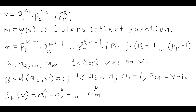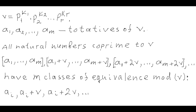The first totative is always 1, and the last totative is always v-1. Function sk of v is defined as the sum of powers to the same number k of all m totatives of number v. This set of m totatives is the basis for the entire set of natural numbers that are coprime to v. If you add v to each totative, you will get the next set of m numbers coprime to v; if you add 2v to each totative, you get the next subset, and so on.